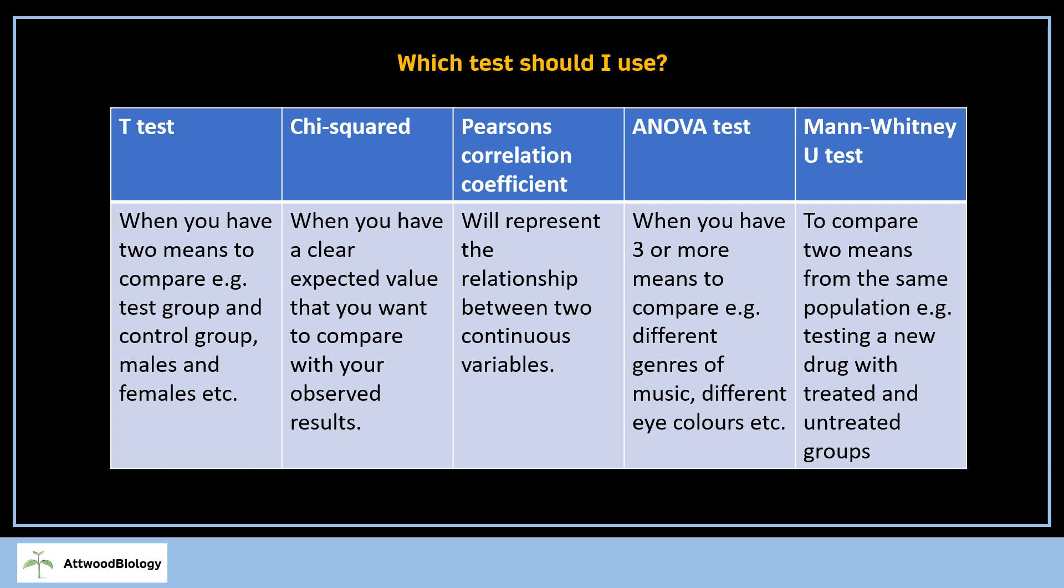Just a quick breakdown of which test you should use. Have a quick read and make sure that this is the correct test for you to use. We use the ANOVA test when you have three or more means to compare. For example, there might be different genres of music as your independent variable, or different eye colors, anything where you're comparing means of different groups.